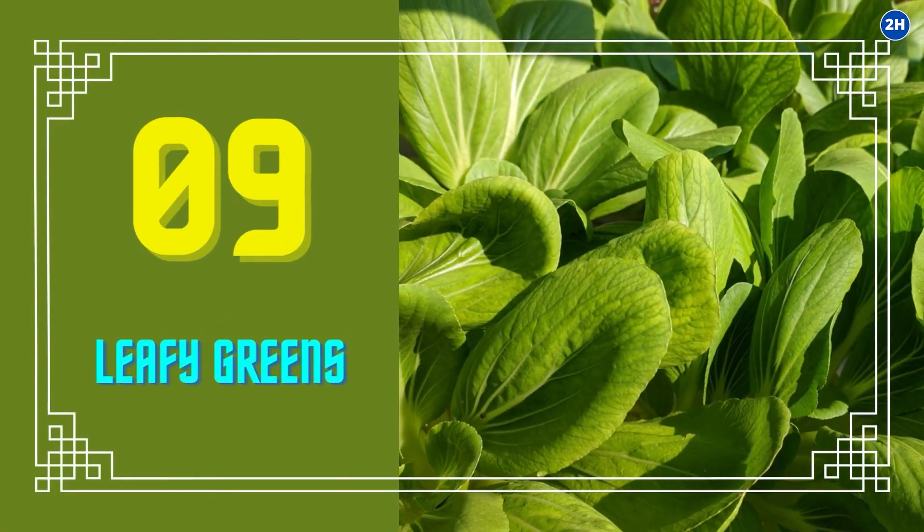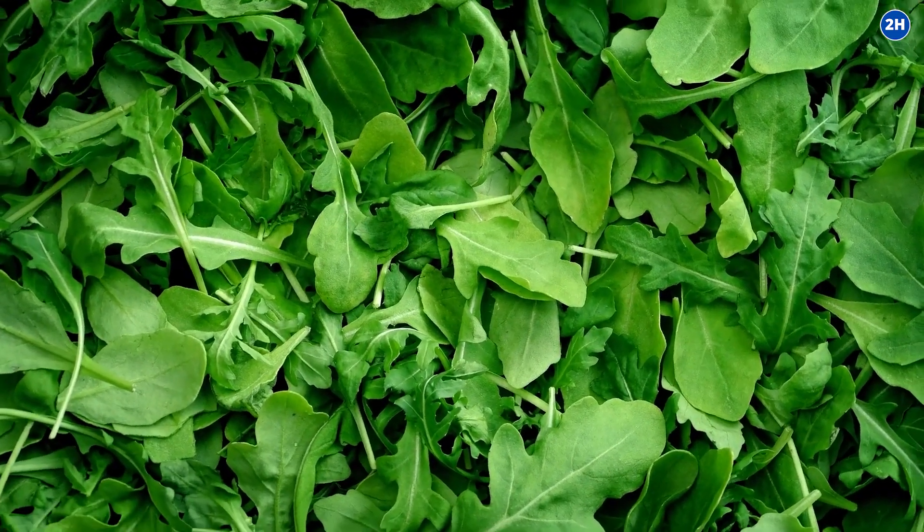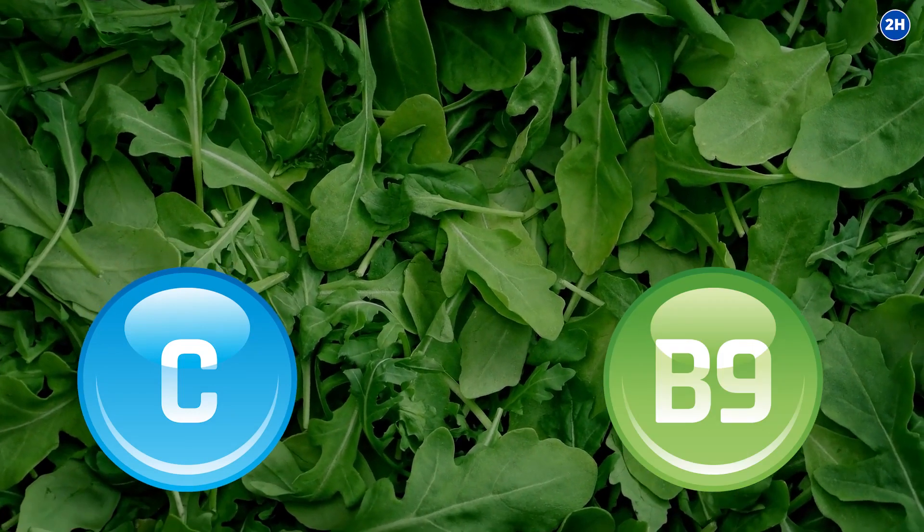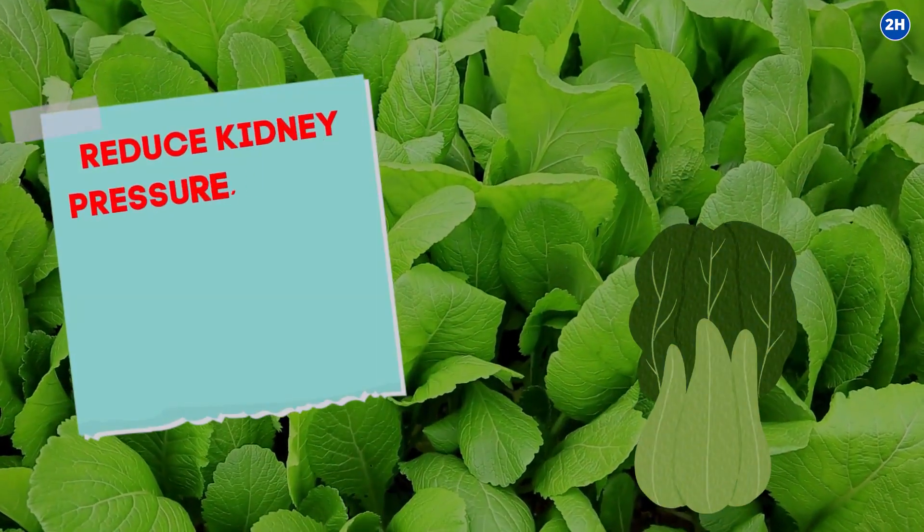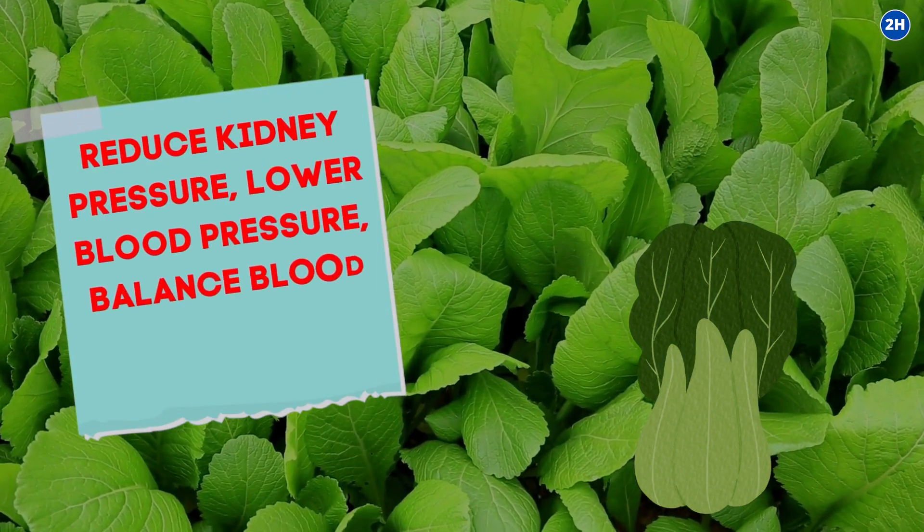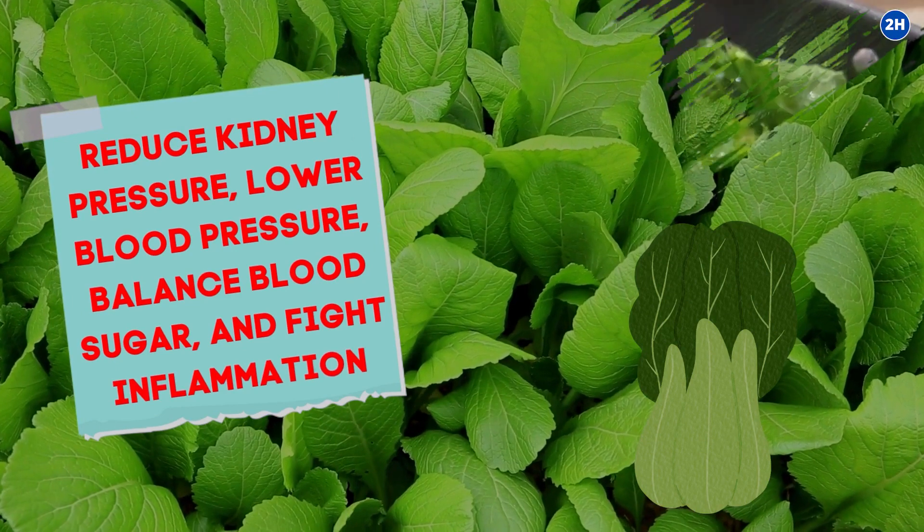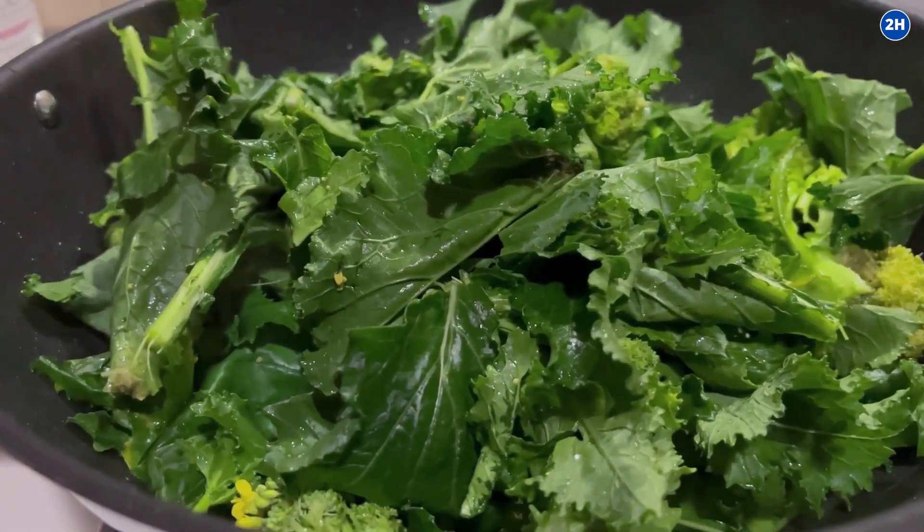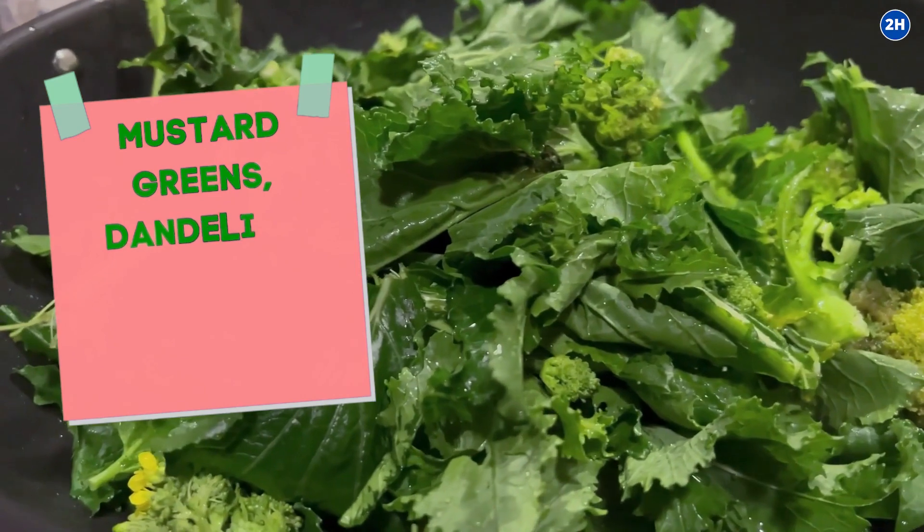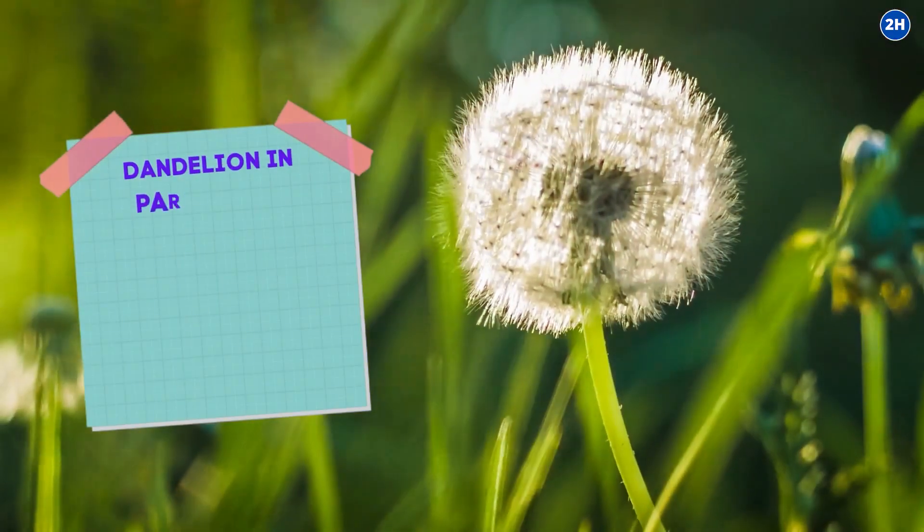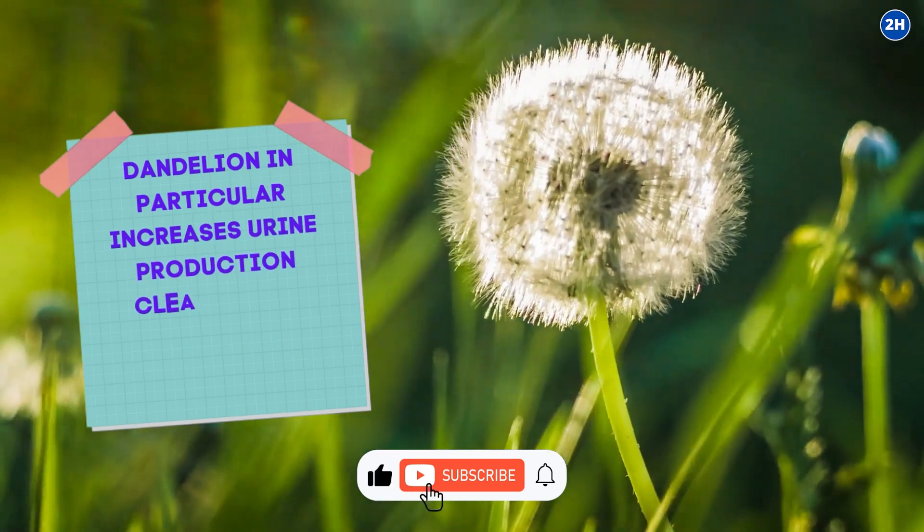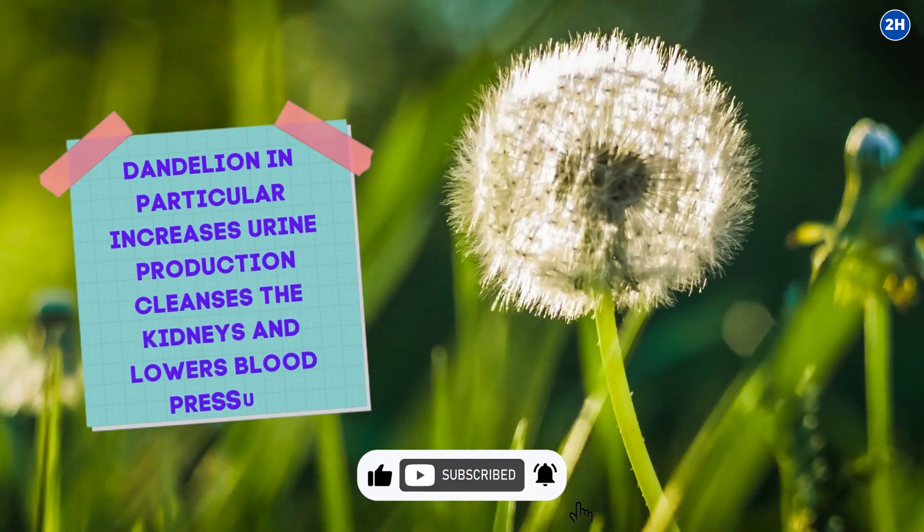9. Leafy Greens. Leafy greens are rich in vitamin C, folate, fiber, vitamin K, and many other phytonutrients that reduce kidney pressure, lower blood pressure, balance blood sugar, and fight inflammation. Consider including healthy vegetables in your diets such as mustard greens, dandelion leaves, and turnip greens. Dandelion in particular increases urine production, cleanses the kidneys, and lowers blood pressure.